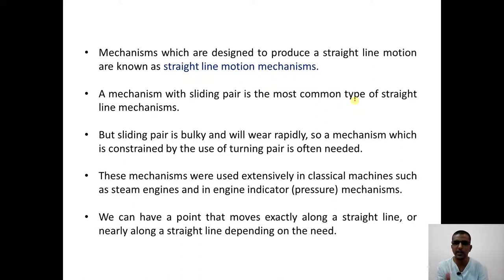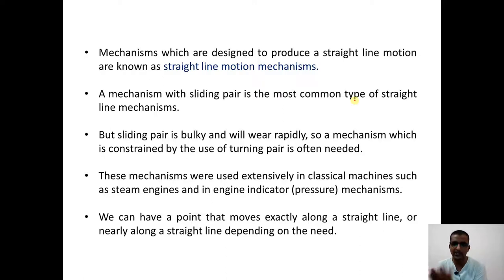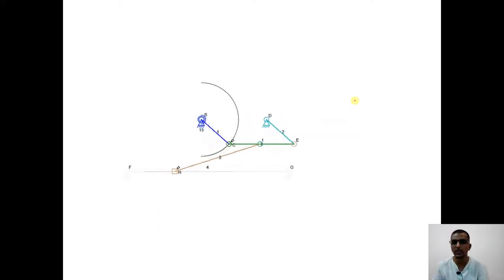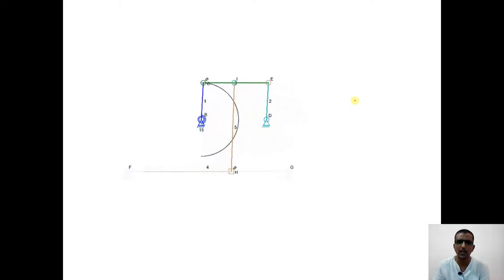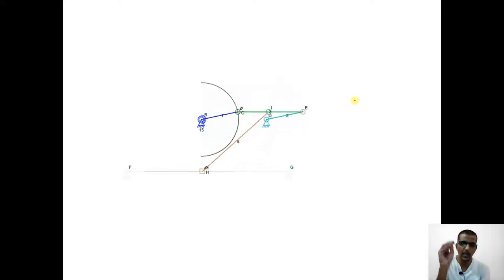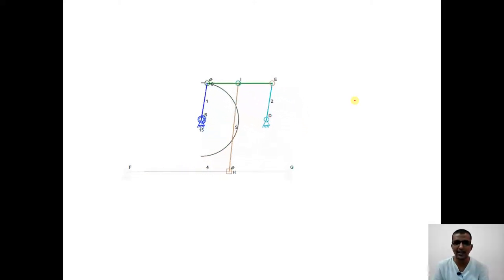We can have a point that moves exactly along a straight line or nearly along a straight line depending on the need. We can call it an approximate straight line producing mechanism or an exact straight line producing mechanism. One example of a mechanism which can generate an approximate straight line is Roberts' approximate straight line mechanism. It is a simple four bar mechanism where at the center of the coupler we drop down a link, and the path traced by that endpoint will be approximately a straight line.